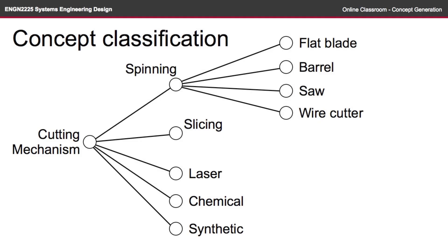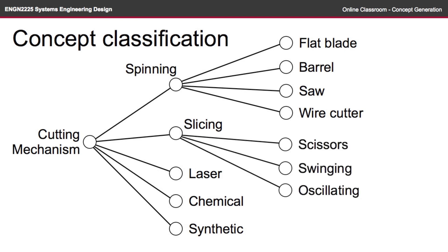Expanding the spinning class into the actual items from the brainstorming session, we have the flat blade, the barrel, the saw, and a wire cutter. For the slicing classification, we have the scissors, the swinging blade, and the oscillating blade.